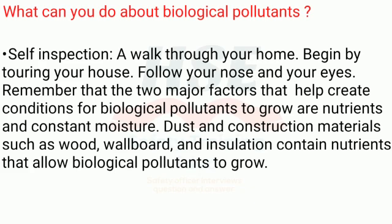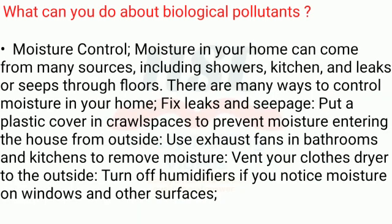What can you do about biological pollutants? Self-inspection — begin by touring your house. Follow your nose and your eyes. Remember that the two major factors that help create conditions for biological pollutants to grow are nutrients and constant moisture. Dust and construction materials such as wood, wallboard, and insulation contain nutrients that allow biological pollutants to grow.